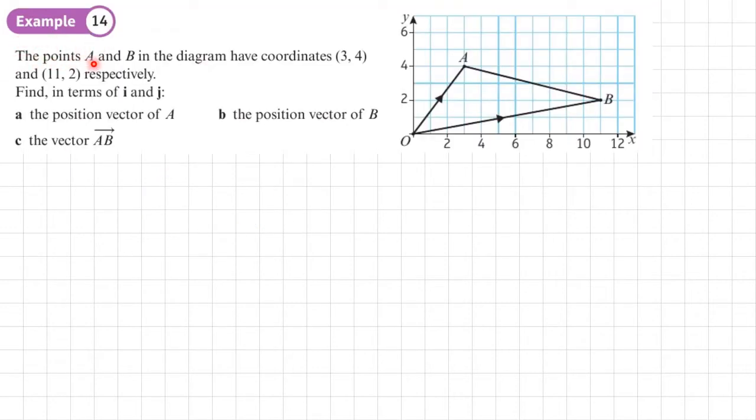Example 14, the points A and B in the diagram have coordinates 3, 4, so 3, 4 there, and 11, 2 here, respectively. It's all drawn to scale. Find in terms of I and J, part A, the position vector of A.